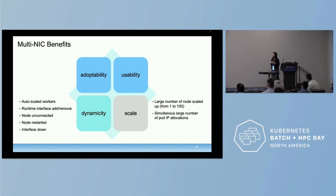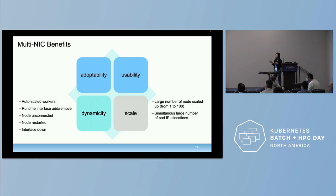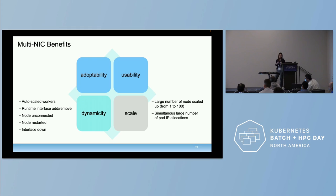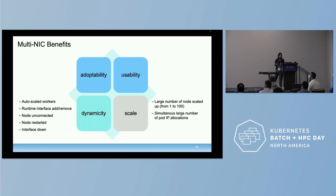The benefits of ManVinix are not just adaptability and usability — admins and users don't have to do much about the network to enable multi-NIC InfiniBand into the pod. Furthermore, ManVinix also considers the dynamicity of the cluster: the cluster machines can be scaled out and scaled in at any time depending on workload demand, and the interfaces themselves can be added, removed, or become unavailable at any time.